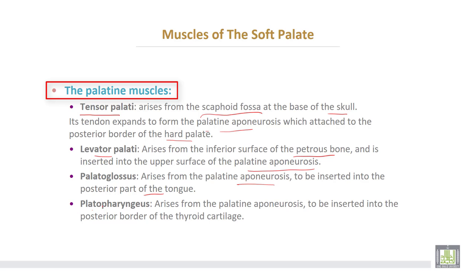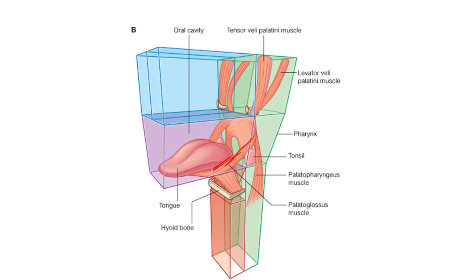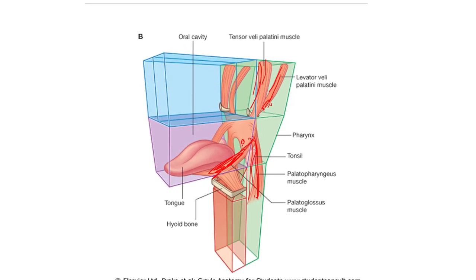The last muscle is palatopharyngeus, which arises from the palatine aponeurosis to be inserted into the posterior border of the thyroid cartilage. In the uvula of the soft palate there is a small muscle called the musculus uvulae.